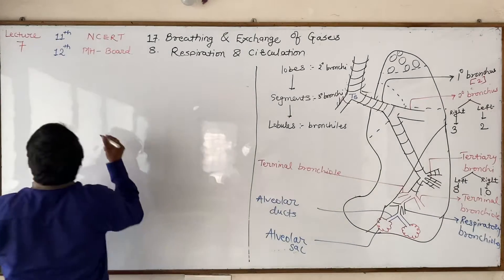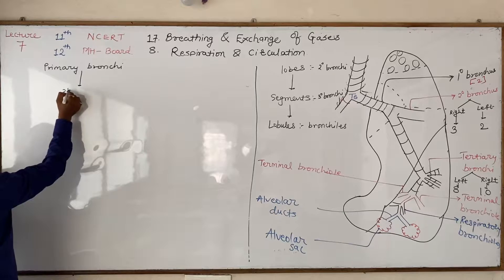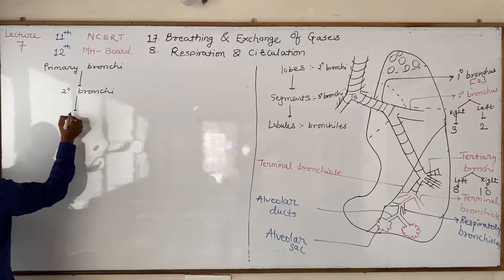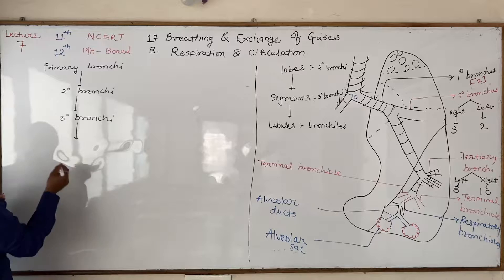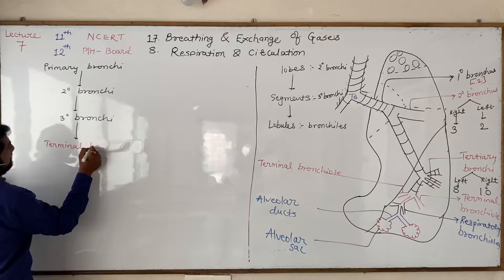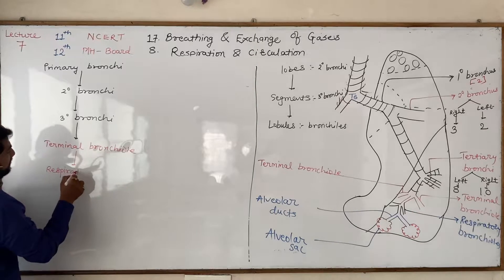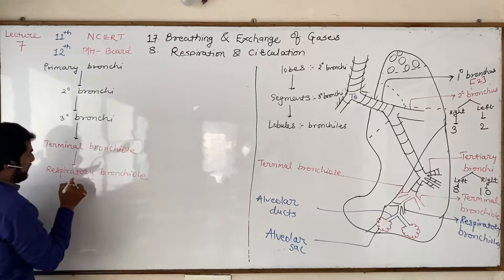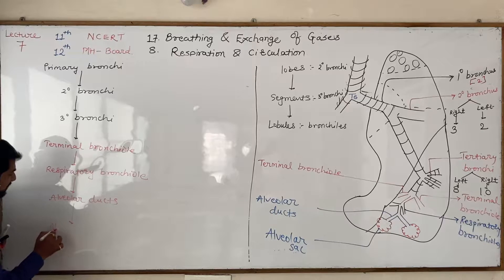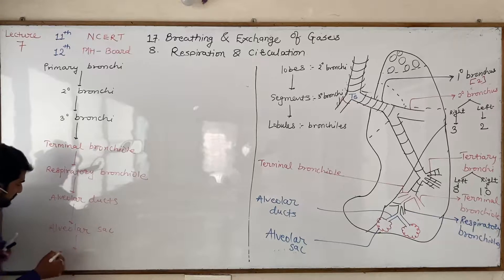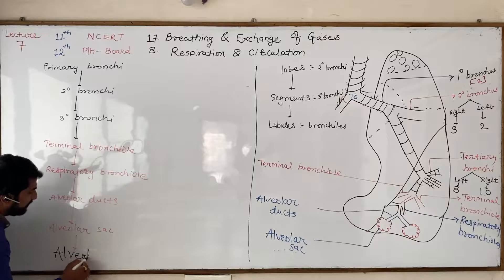Primary bronchi divide into secondary bronchi, secondary into tertiary bronchi, tertiary bronchi divide into terminal bronchioles, terminal bronchioles divide into respiratory bronchioles, respiratory bronchioles divide into alveolar ducts, and alveolar ducts finally turn into alveolar sac. The alveolar sac consists of the very important structural and functional unit of the respiratory system — the alveoli.